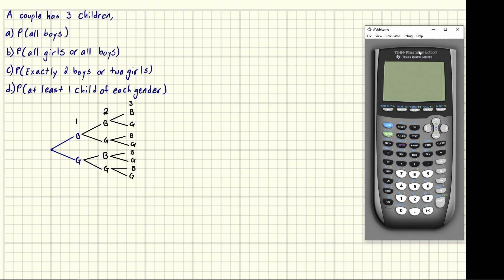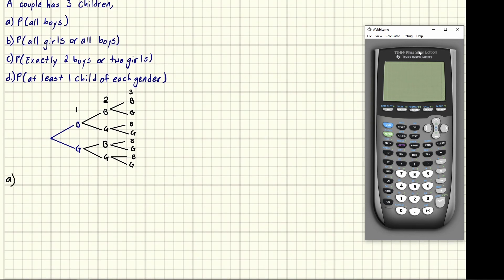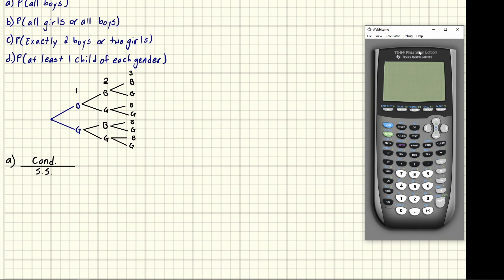All the possible outcomes are: the first child could be a boy, then another boy, then another boy — all boys — or boy, boy, girl, or boy, girl, boy, and so on. By tracing out a path on this tree we can find all the possible ways to have three children. Now let's tackle part a: the probability of all boys. Our condition is all boys, and there's only one path that gives boy-boy-boy.